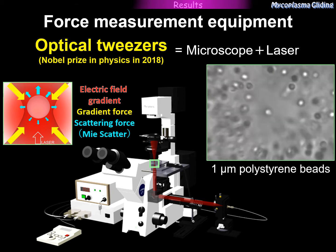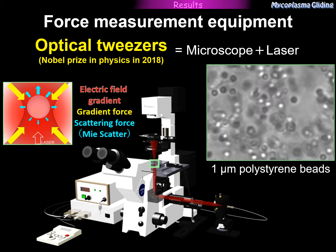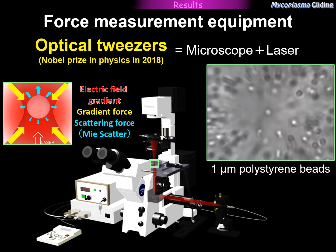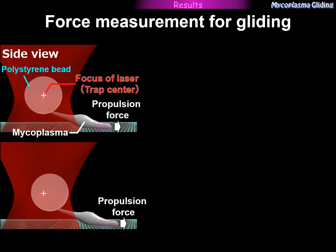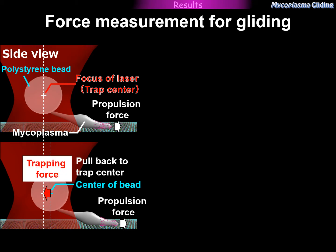Here is an example. We turn on the laser and micron-sized polystyrene beads are captured at the focused point of the laser. The laser is invisible because the wavelength is more than 1000 nm. To measure gliding force, we first capture a polystyrene bead and bind it to the back end of the pneumoniae cell. The cell generates force for gliding and moves in the direction of the arrow. As the bead moves away from the focused point of the laser, it is pulled back — this backward force is called the trapping force. The trapping force increases with the distance between the focused point and the center of the bead, so when the trapping force equals the propulsion force of pneumoniae gliding, the cell gliding stops.